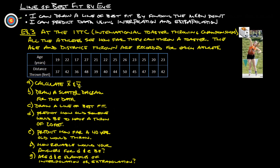So calculate x̄ and ȳ. That's basically the mean for x and the mean for y. You can go through and calculate that - add them all up, divide by the total number. We're going to do a line of best fit, predict how old someone would have to be to throw 20 feet, predict how far a 40-year-old would throw, and so forth. This is doing line of best fit by eye.